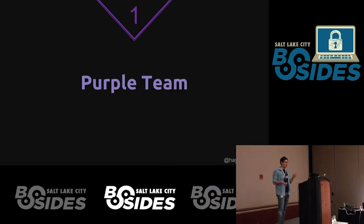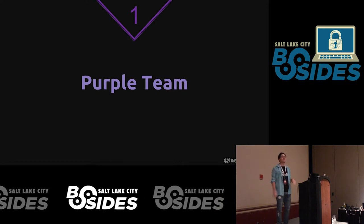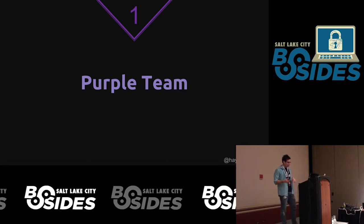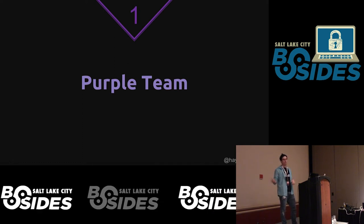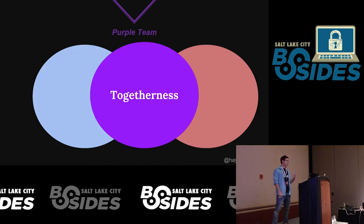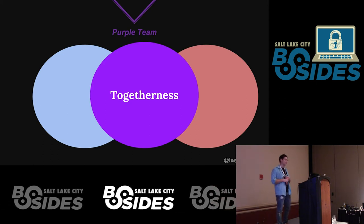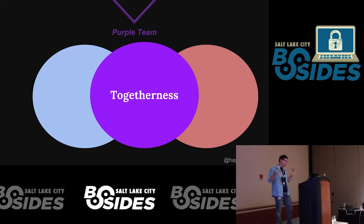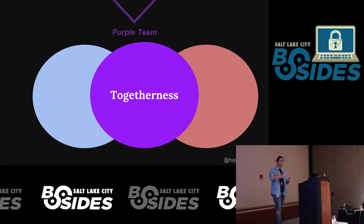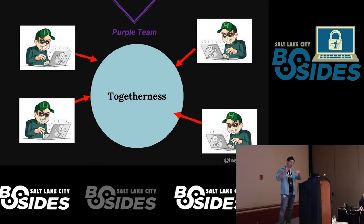Purple teaming — the definition. You might have heard of it; Dave Kennedy mentioned it a few times in the keynote. The reason I like it is that if you know what a red team is and you know what a blue team is, you get the instant idea that it's about collaboration and togetherness. Purple teaming is not just the red and blue team hugging it out awkwardly or throwing punches — it's more than shaking hands and being friends. It's blue and red working together.